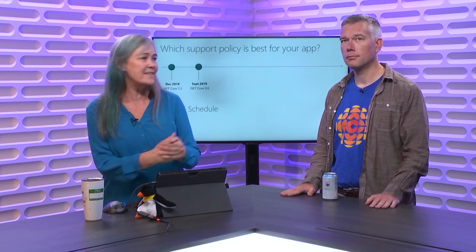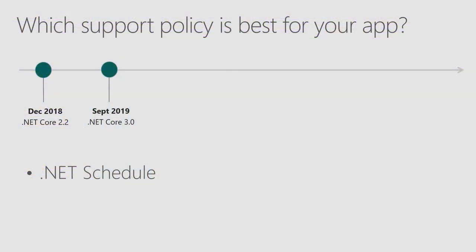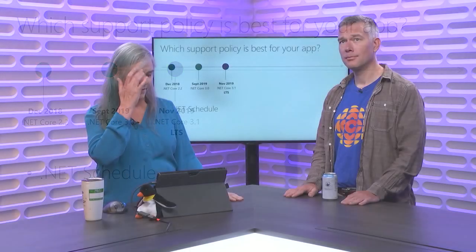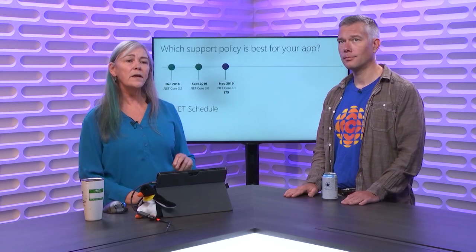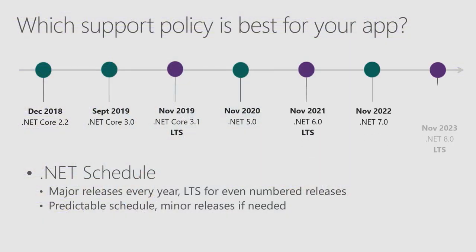Next, let's talk about support policy. The support policy is different for .NET Framework and .NET Core. In November, we're going to have 3.1, which we're calling LTS — long-term support. Coming up after that, we're going to have a major release every year, and every other year it's going to be LTS. You can think of it like a second train track, where LTS versions appear — and it's hard to jump across the tracks in between. Your best bet is to pick one of these tracks and commit to it.